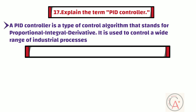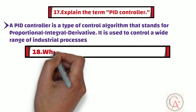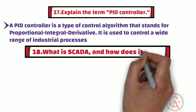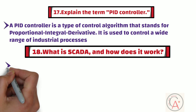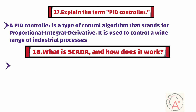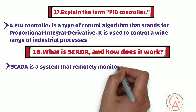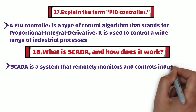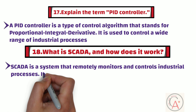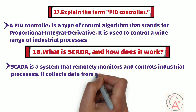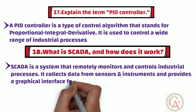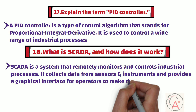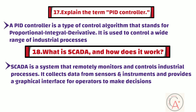The 18th question is: what is SCADA and how does it work? SCADA, or Supervisory Control and Data Acquisition, is a system that remotely monitors and controls industrial processes. It collects data from sensors and instruments and provides a graphical interface for operators to make decisions.